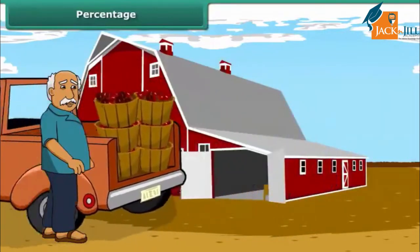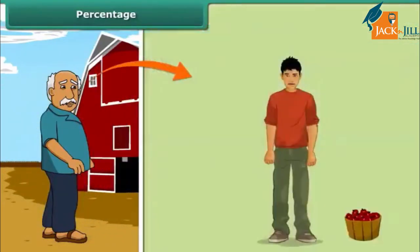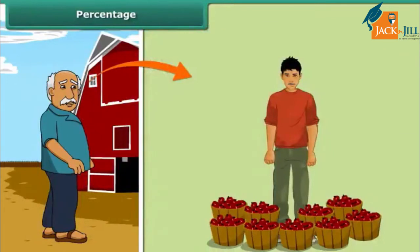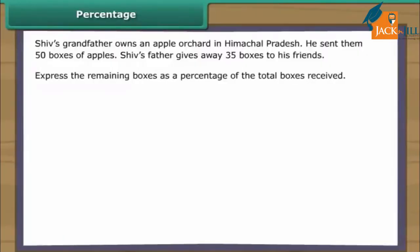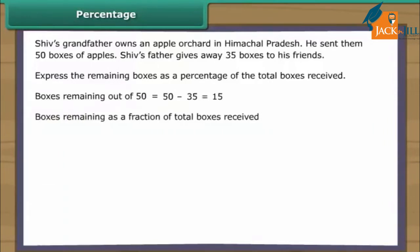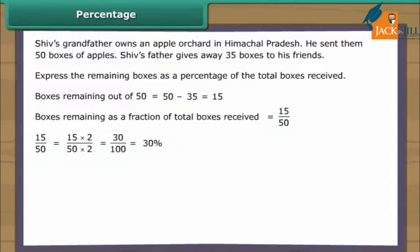Shiv's grandfather owns an apple orchard in Himachal Pradesh. He sent them 50 boxes of apples. Shiv's father gives away 35 boxes to his friends. Boxes remaining out of 50 equals 50 minus 35, which equals 15. Boxes remaining as a fraction of total boxes received equals 15/50. Converting the denominator to 100: 15/50 = 30/100 = 30%. Remaining boxes constitute 30% of the total received.